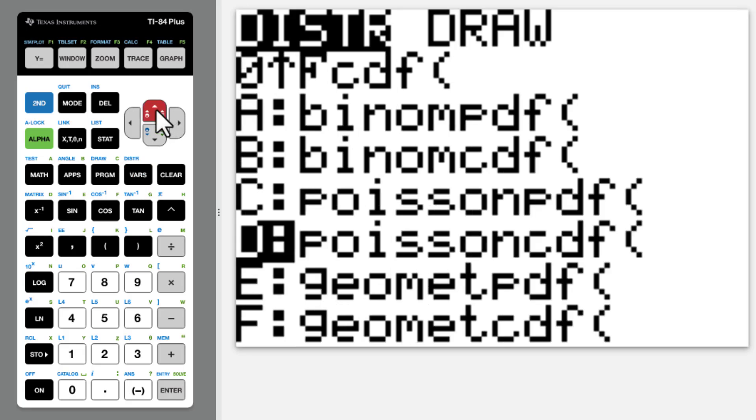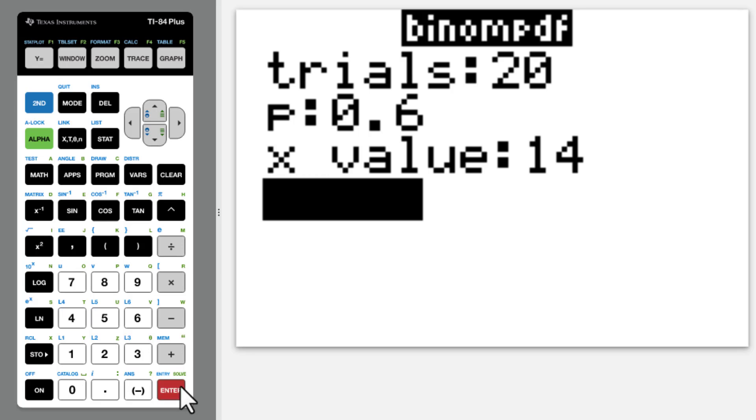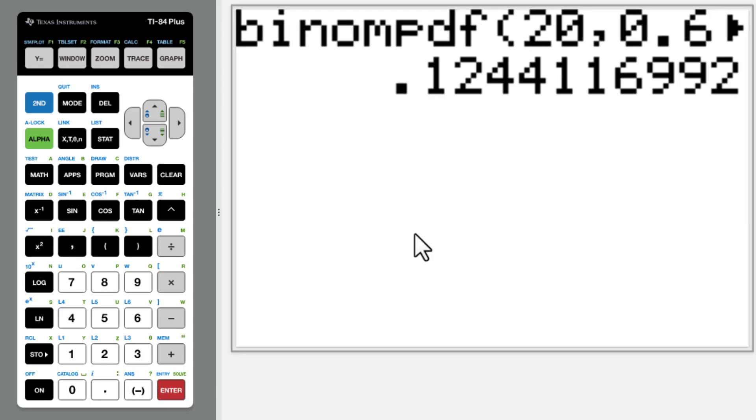Binomial PDF. 20 at the trial, probability is 0.6, X value 14. Then enter. Answer is 0.124.